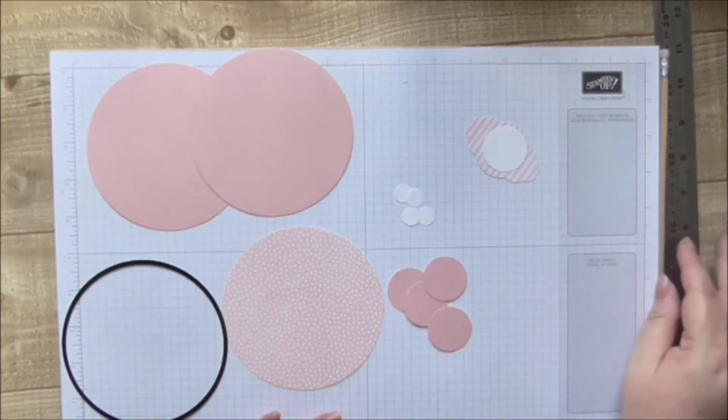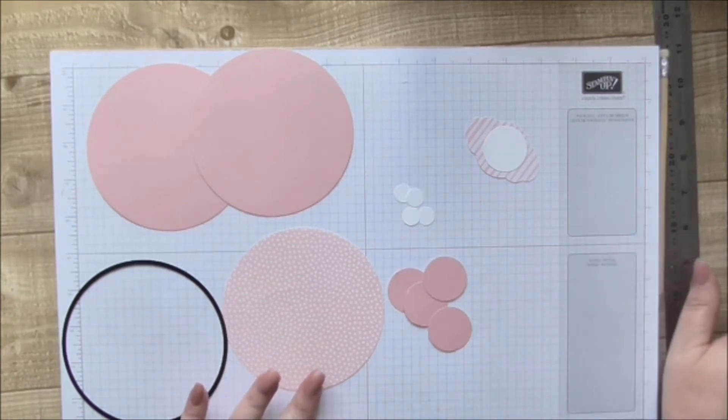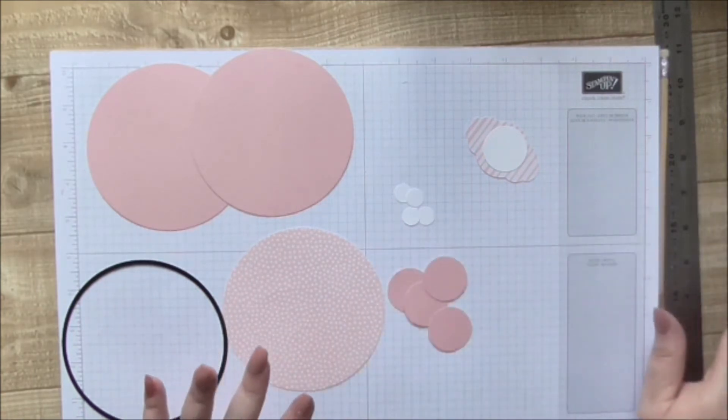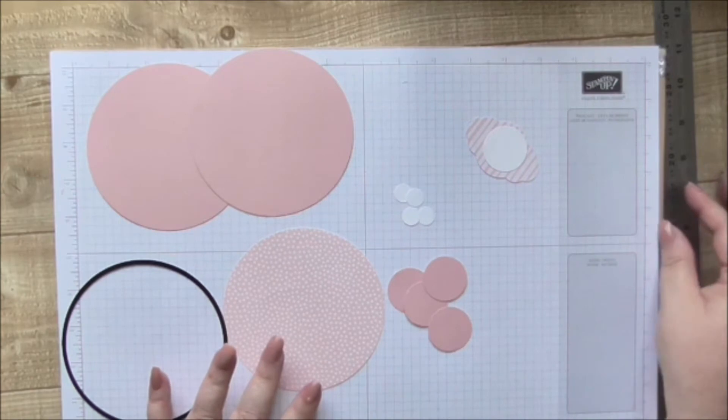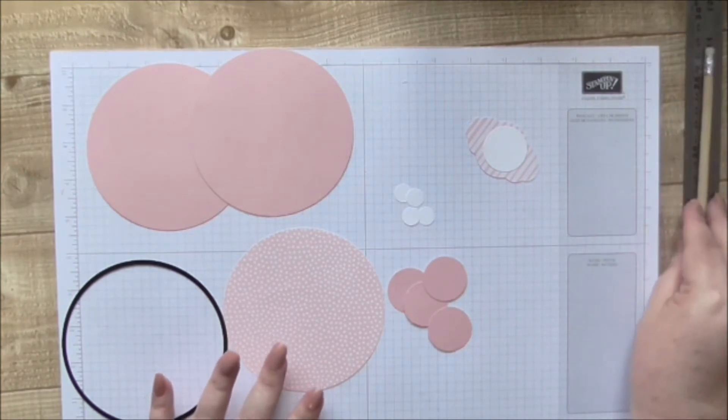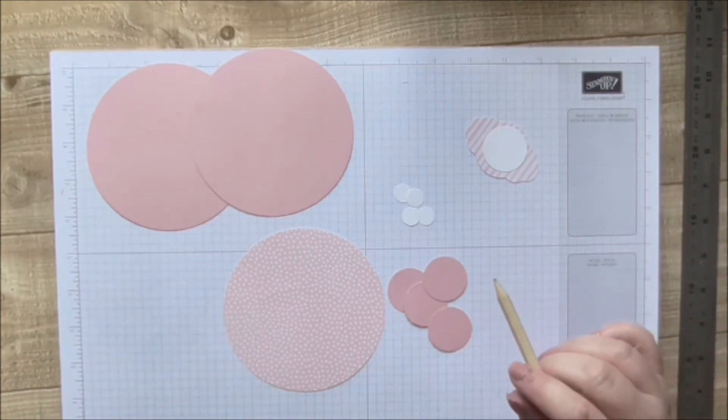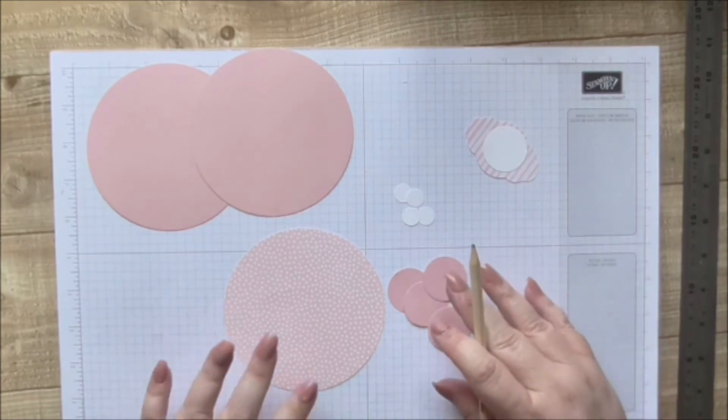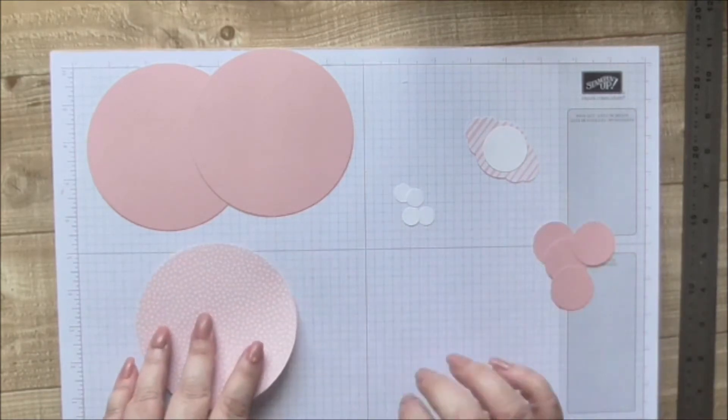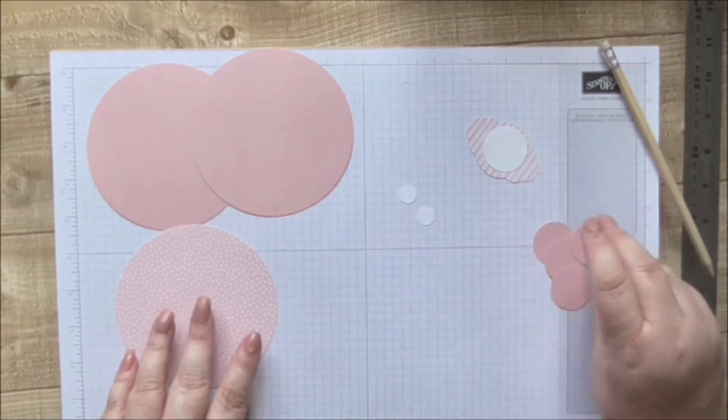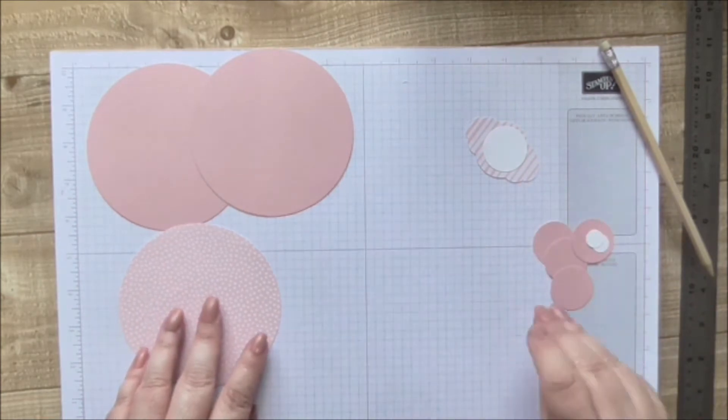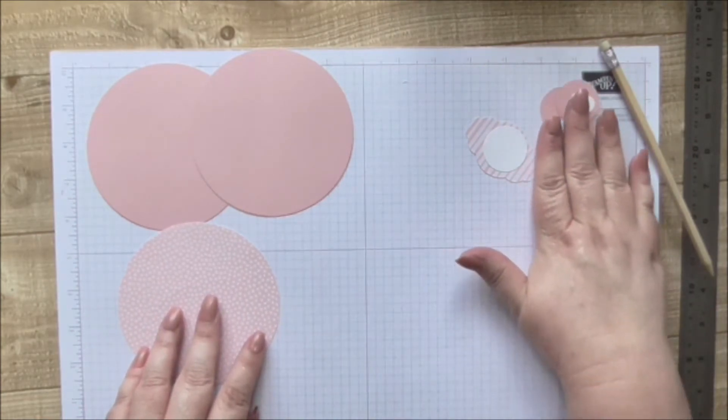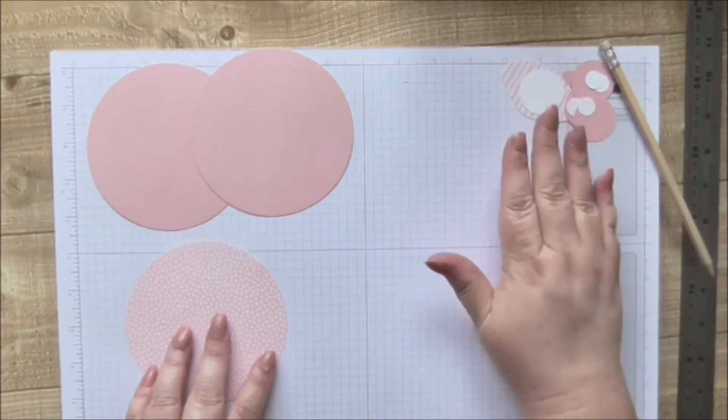The only other thing you need is some ribbon. So I've got some polka dot tulle here, and you'll need a ruler and a pencil and some scissors and some glue and a bone folder.